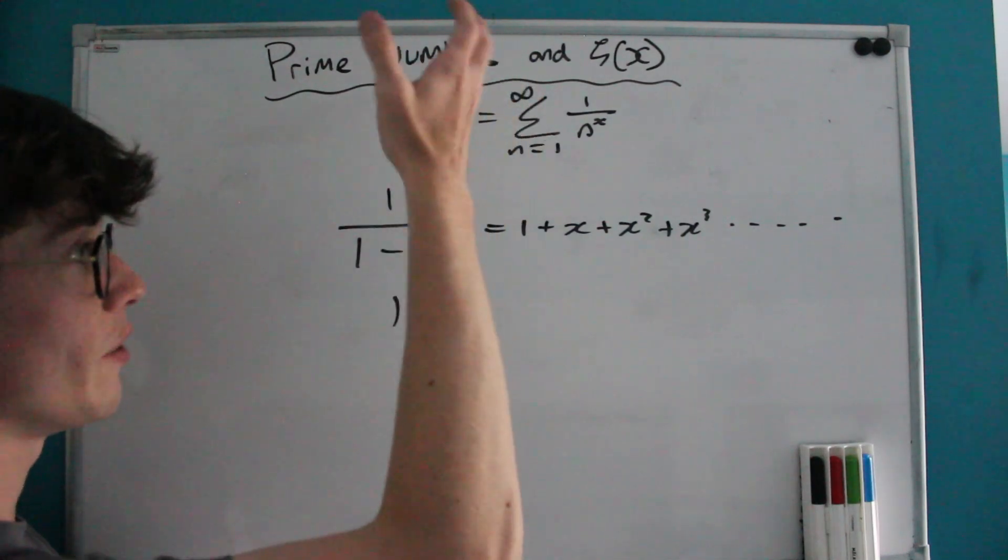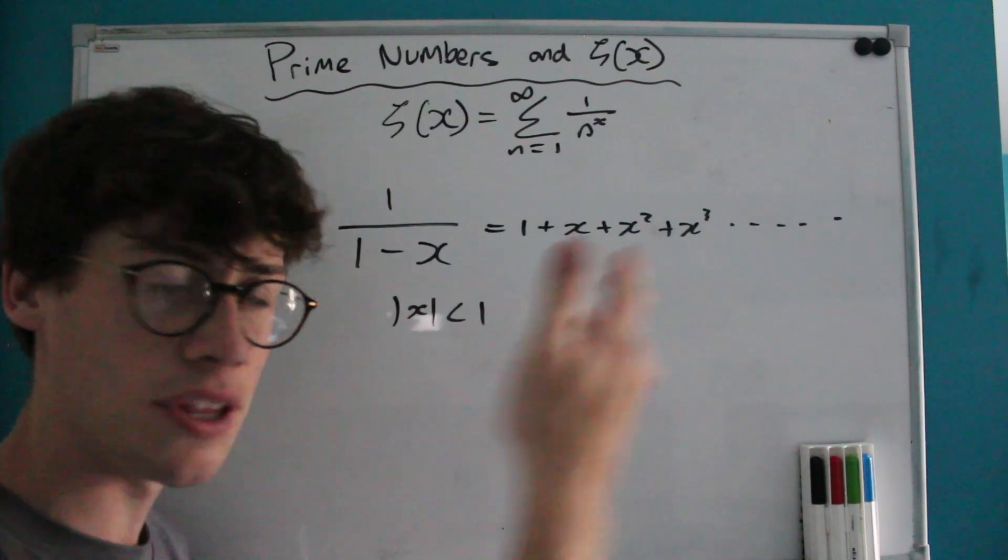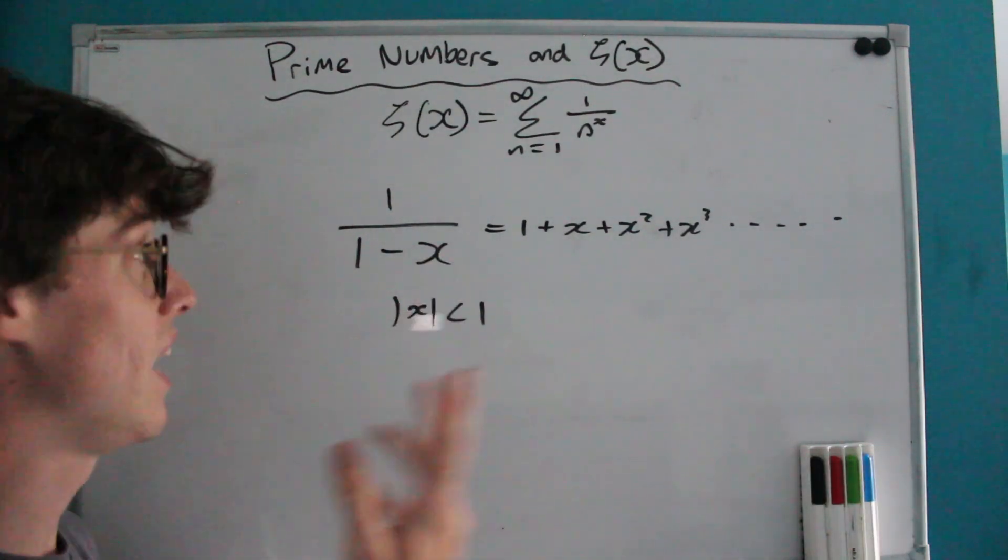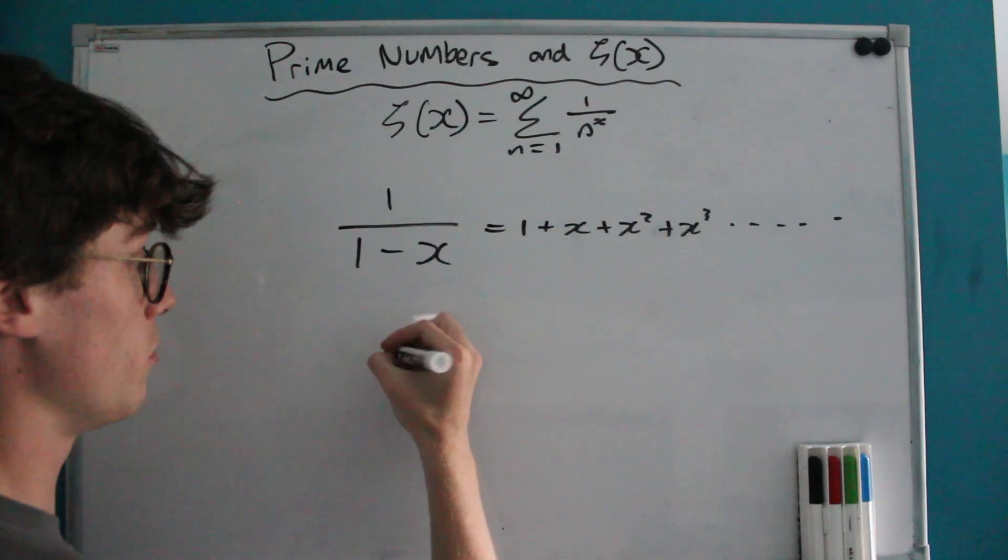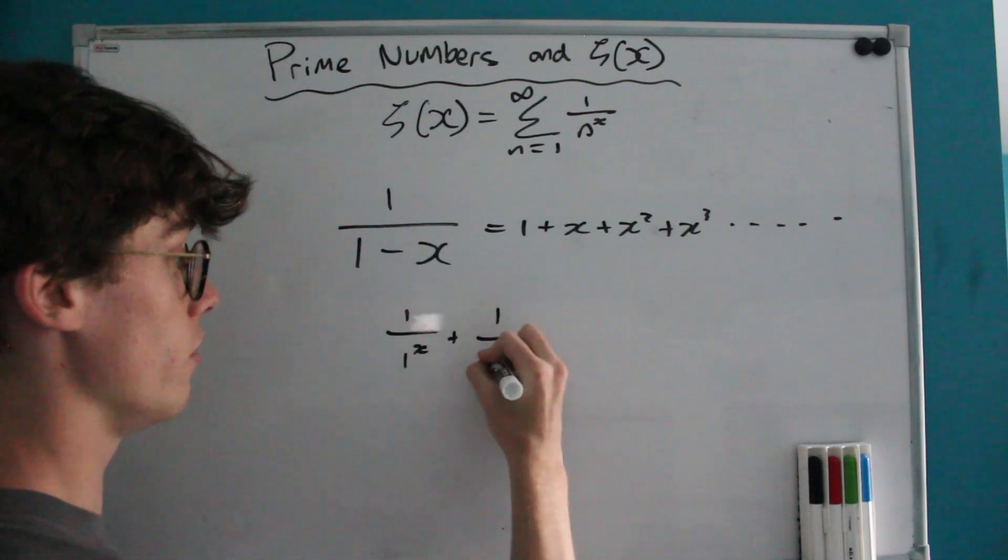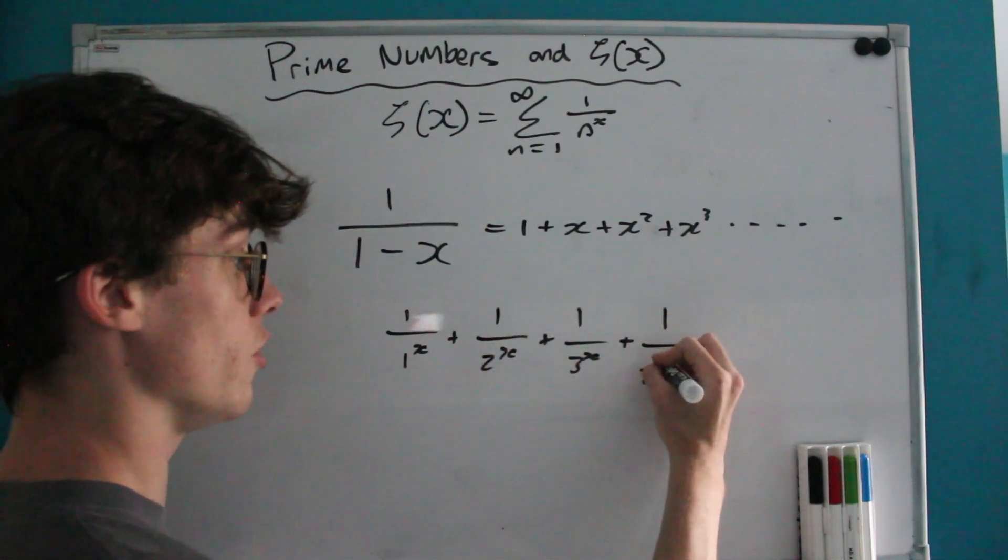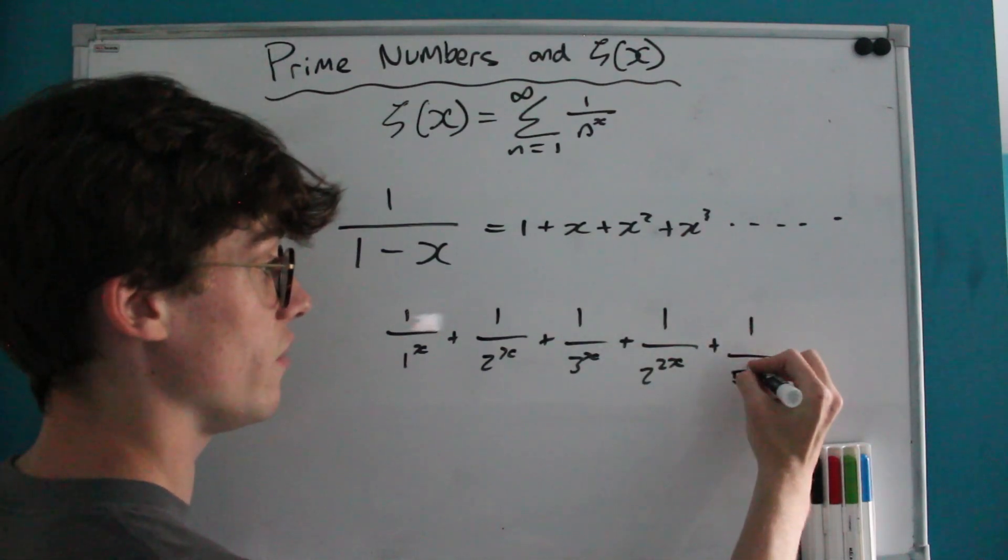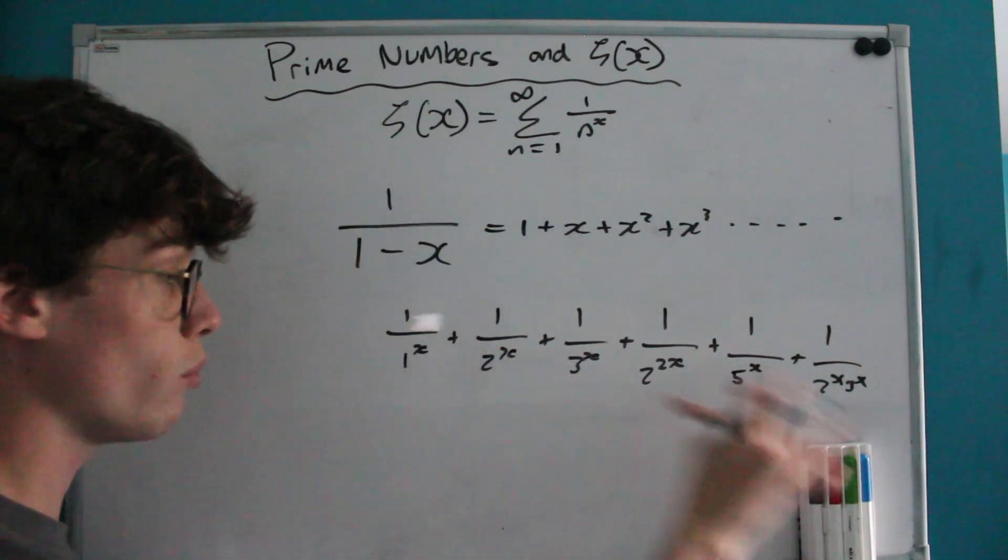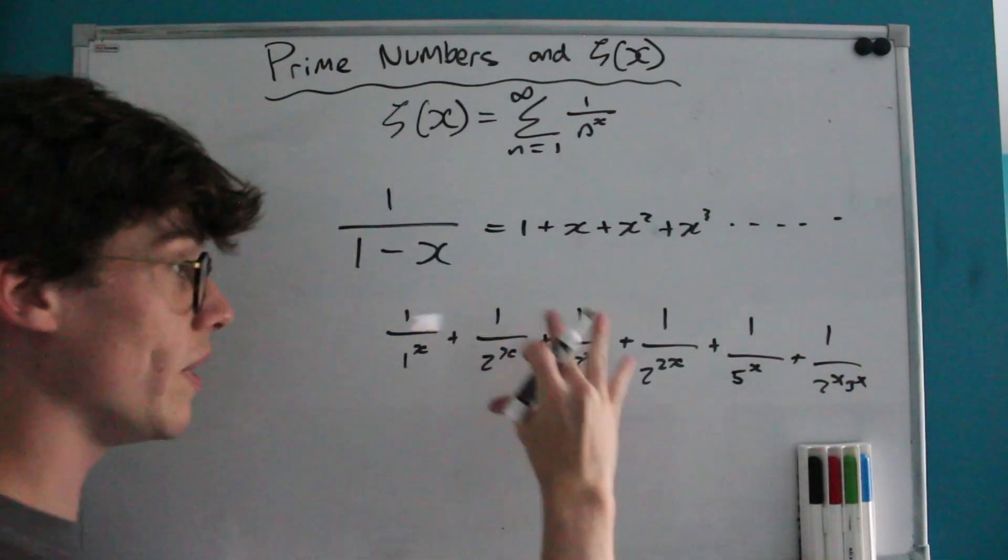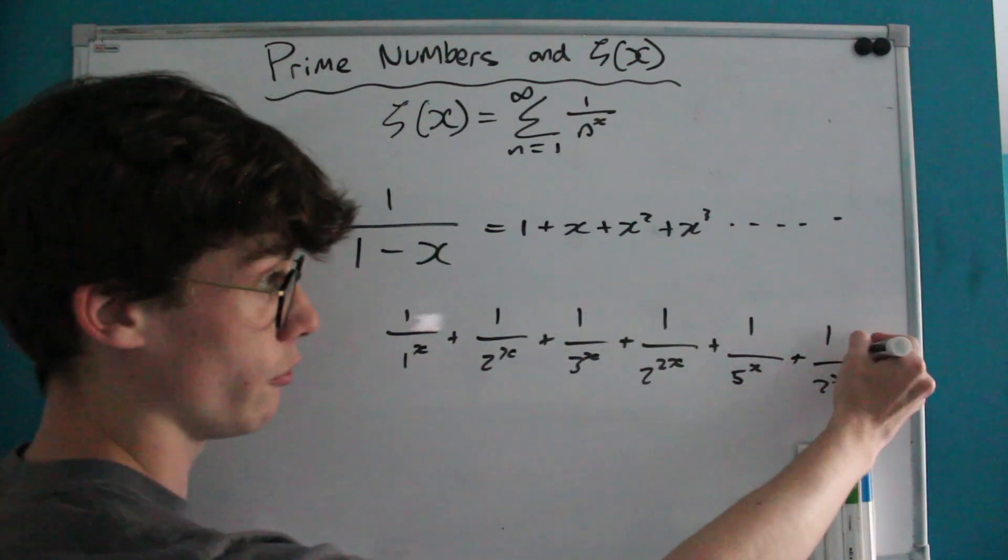And what we have to consider about the zeta function is although it may not be a geometric series, every term within the zeta function must have some prime factorization. So consider the zeta function must be equal to 1 over 1 to the x plus 1 over 2 to the x plus 1 over 3 to the x plus 1 over 2 to the 2x plus 1 over 5 to the x plus 1 over 2 to the x times 3 to the x. And so you can see that what we've got is ultimately an interaction of prime factors on our denominators going off to infinity.